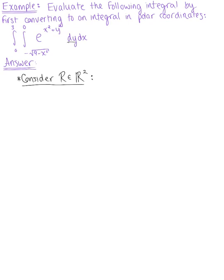Our inner integral is going to be with respect to y. The bounds on y: y is greater than or equal to minus the square root of 9 minus x squared, and less than or equal to 0. Then the outer bounds on x: x is greater than or equal to 0, less than or equal to 3.